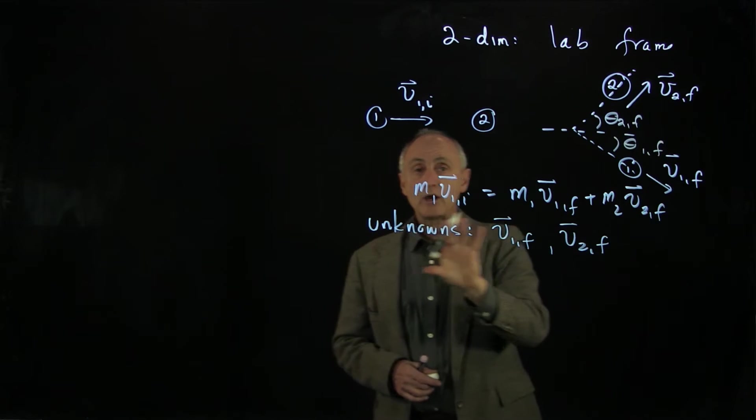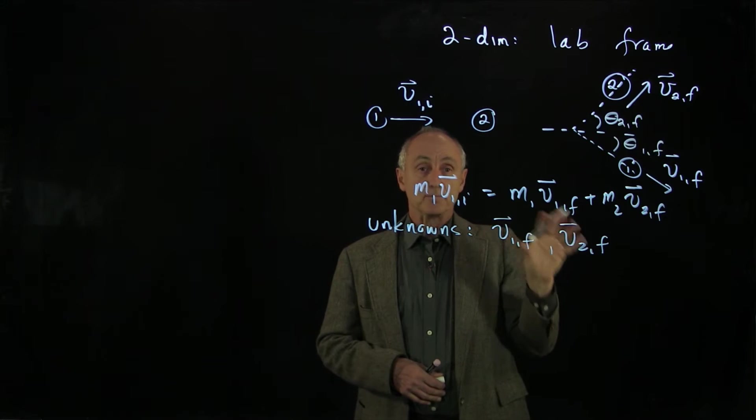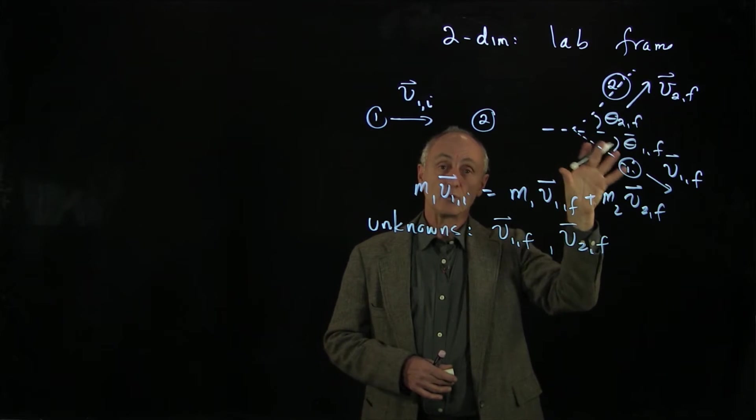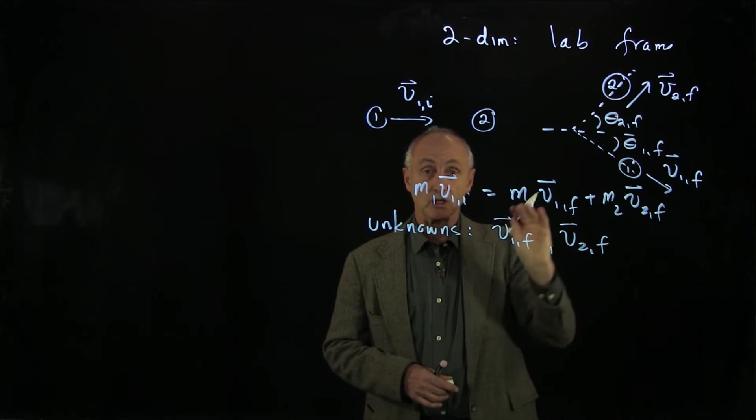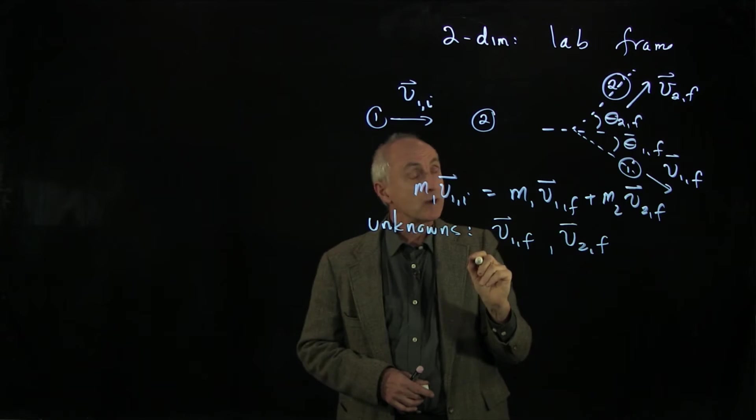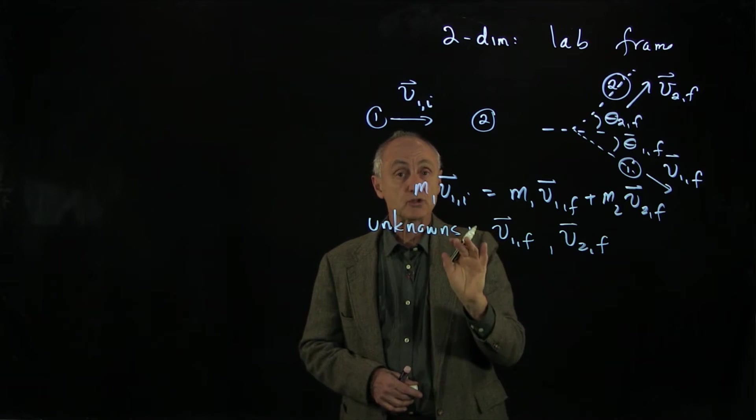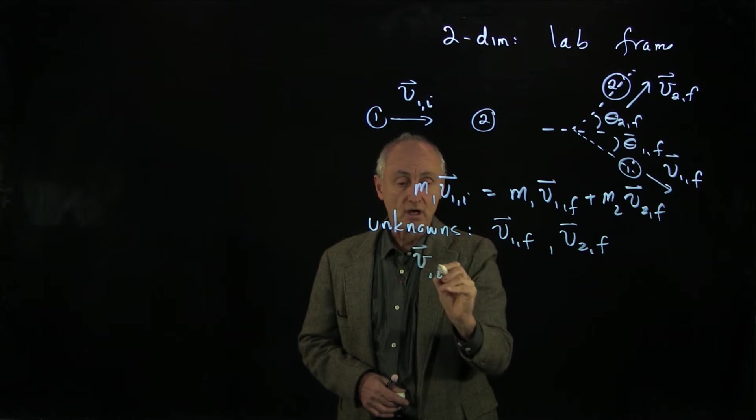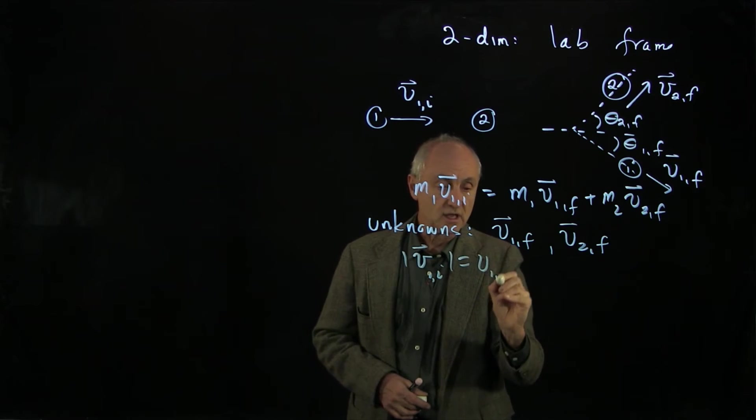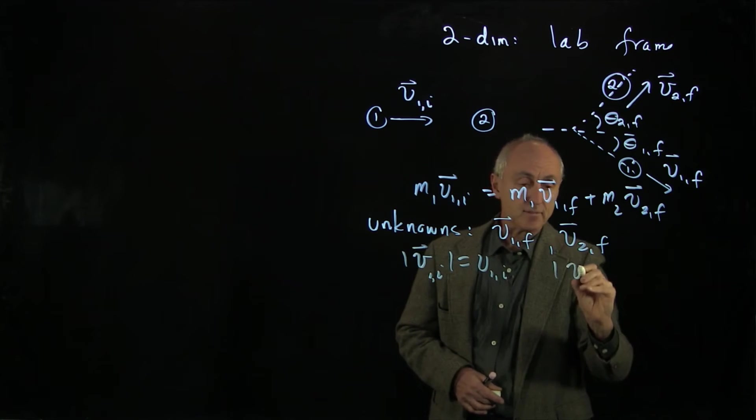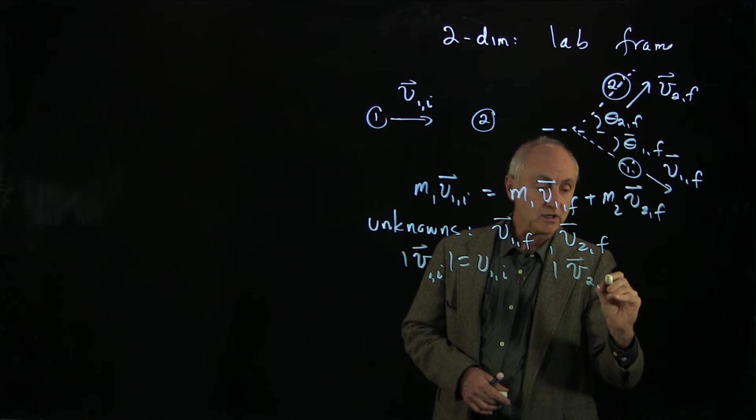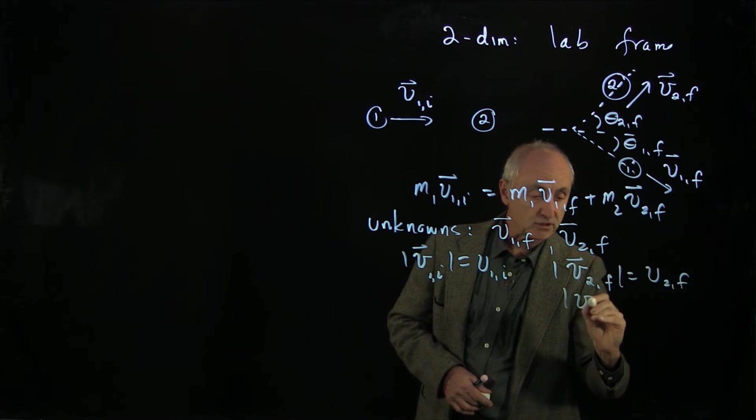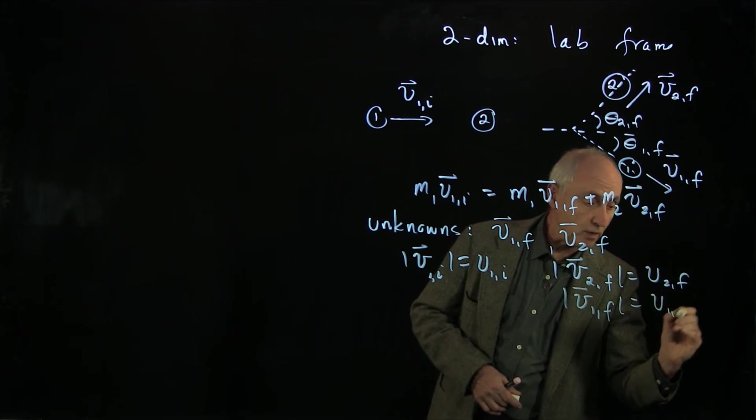And so when we write our two momentum equations, we can either write it as components, or we can write it in terms of magnitudes and directions, and do vector decomposition. Now, because we measure the outcoming directions, we're going to choose to do magnitudes and directions. So let's indicate a little notation. We'll say that the magnitude of v1 initial is v1i, and the magnitude of v2 final is v2 final, and the magnitude of v1 final is v1 final.